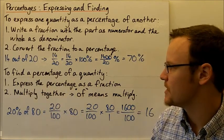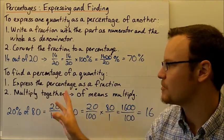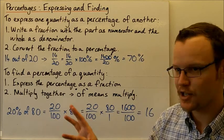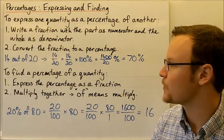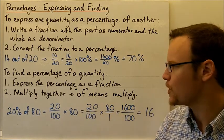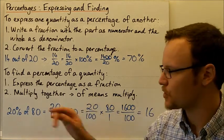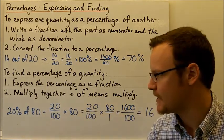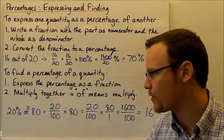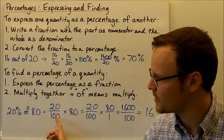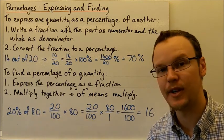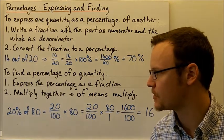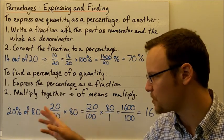So to find a percentage of a quantity, firstly we need to express the percentage as a fraction and then multiply that fraction by the number that we need to find the percentage of. The word 'of' means multiply. So if we've got 20% of 80, that's the same as 20 over 100, so that's 20% as a fraction. We've converted that to a fraction, just 20 out of the 100 parts.